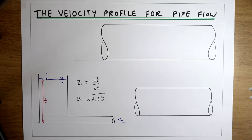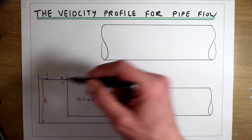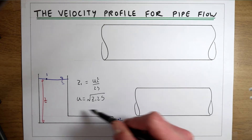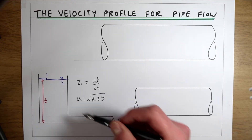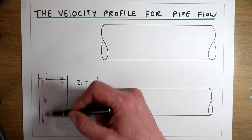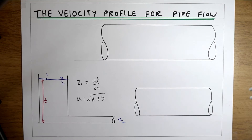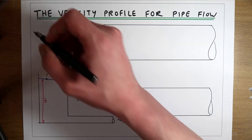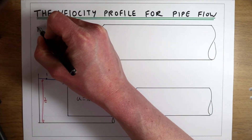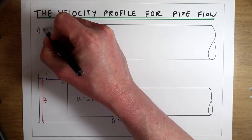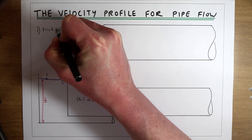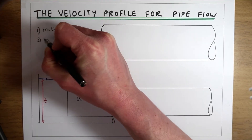The thing to realise about this solution is that we're assuming there are no losses in this pipe — so we're assuming that all of the energy that's elevation at z is being converted into kinetic energy at point number two. What we're effectively assuming here is that we've got an ideal fluid, whereas in reality fluids are not ideal: what we have in real fluids is friction and the effects of viscosity.